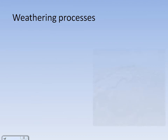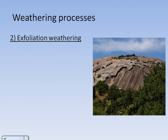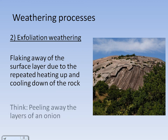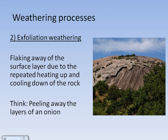Our second process is exfoliation weathering, also known as onion skin weathering. This is the flaking away of the surface layer due to the repeated heating up and cooling down — really hot in the day and really cold at night. It's easy to remember if you think of peeling away the layers of an onion.